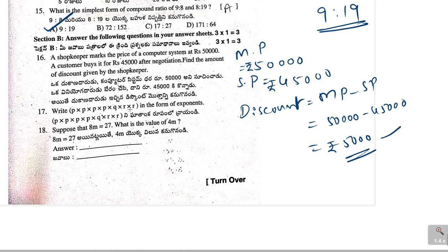Then, 17th one. Write this one in the form of exponents. Just check how many P's are there, 1, 2, 3, 4, 4 P's are there. So, P to the power of 4. Then, Q. Then, R into R. So, R square. This is the answer for 17th one.